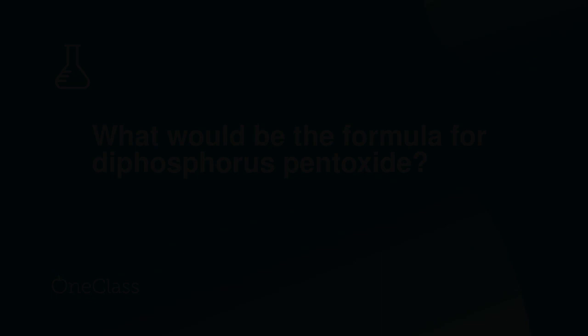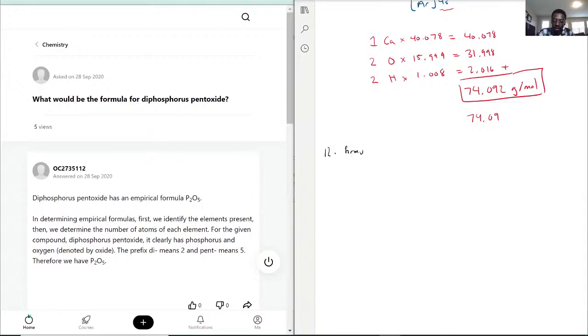What would be the formula for diphosphorus pentoxide? I know you can see the answer there, but let me explain why we have that. Diphosphorus pentoxide. So why do we have this formula here, di and pent?